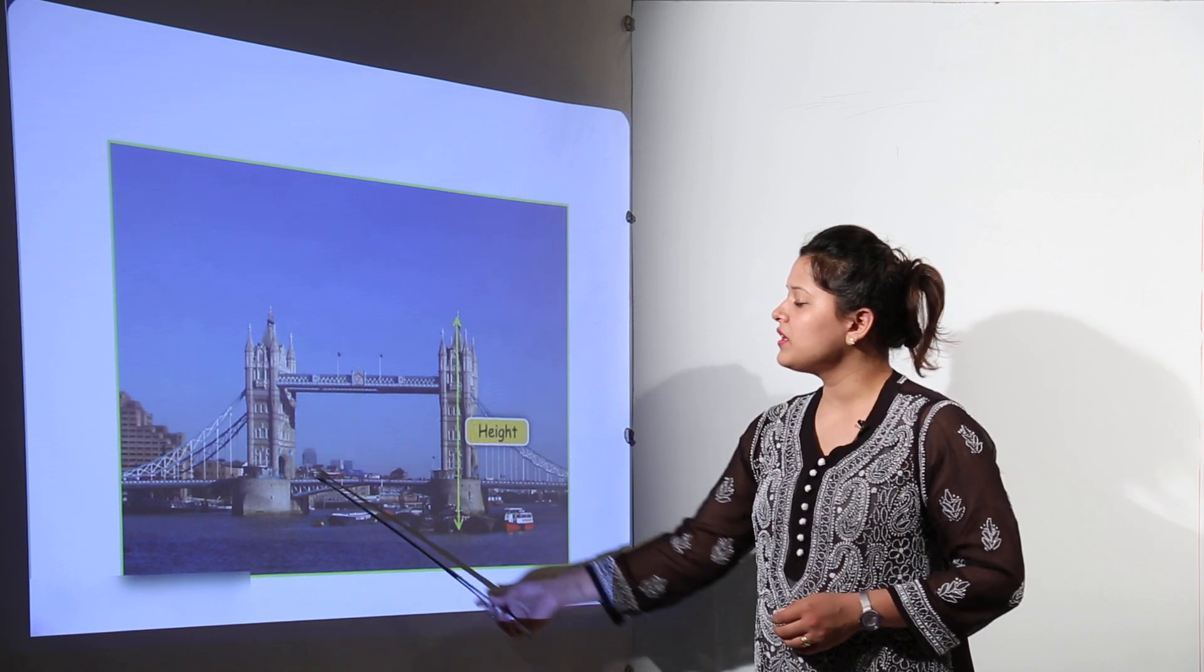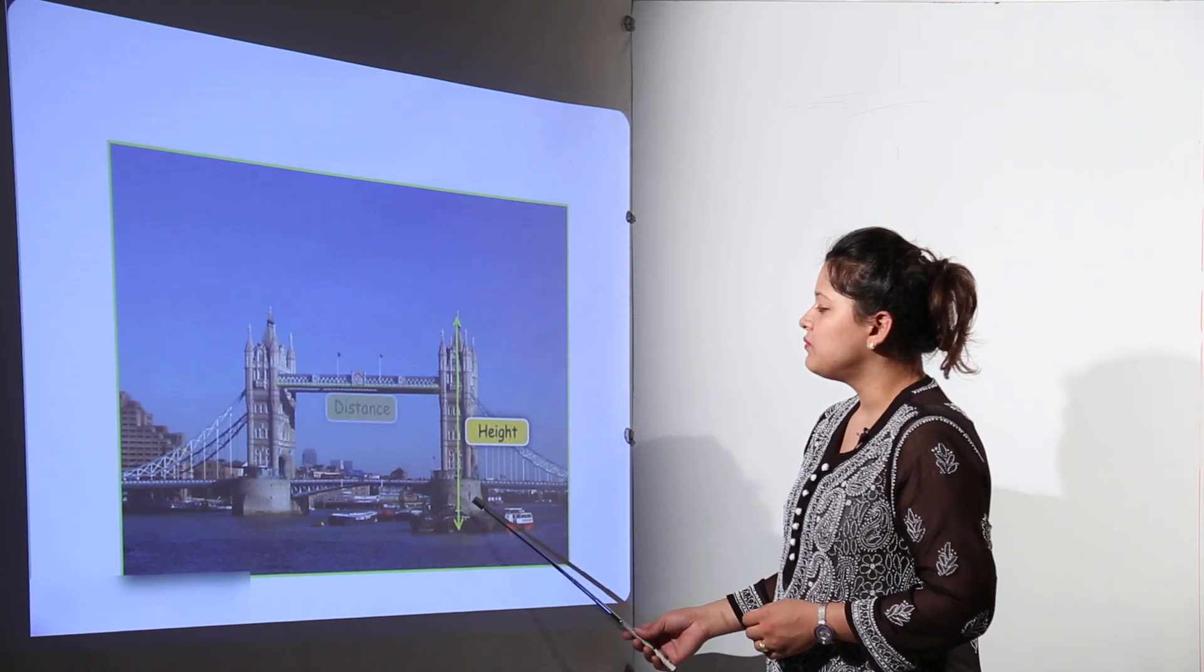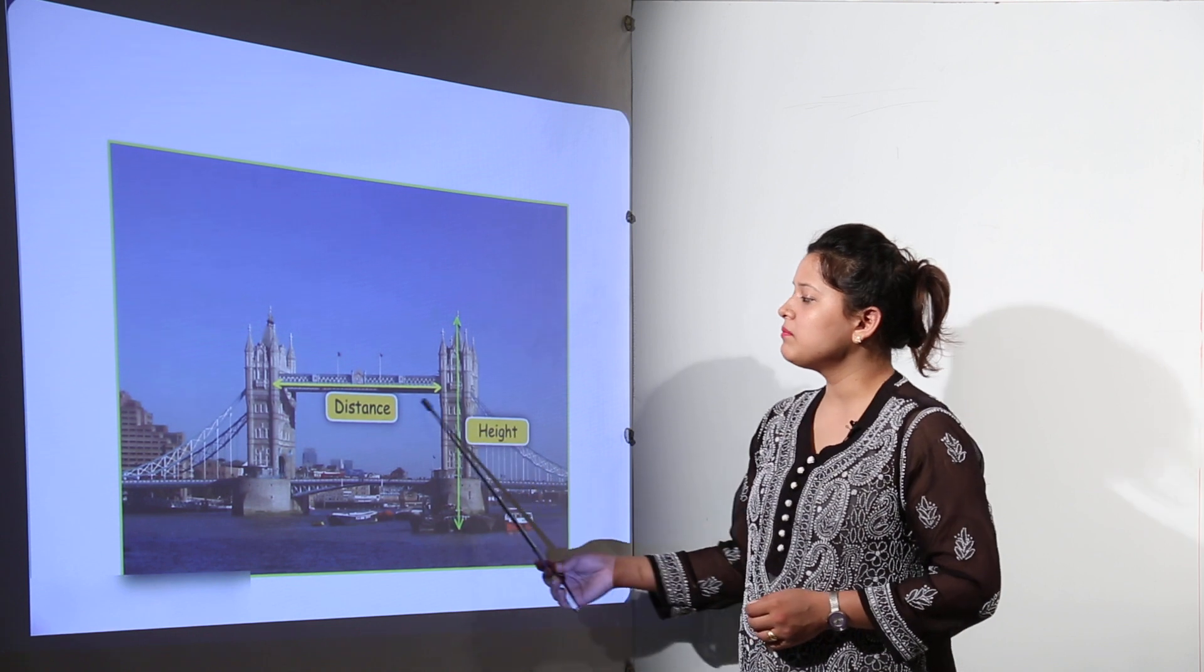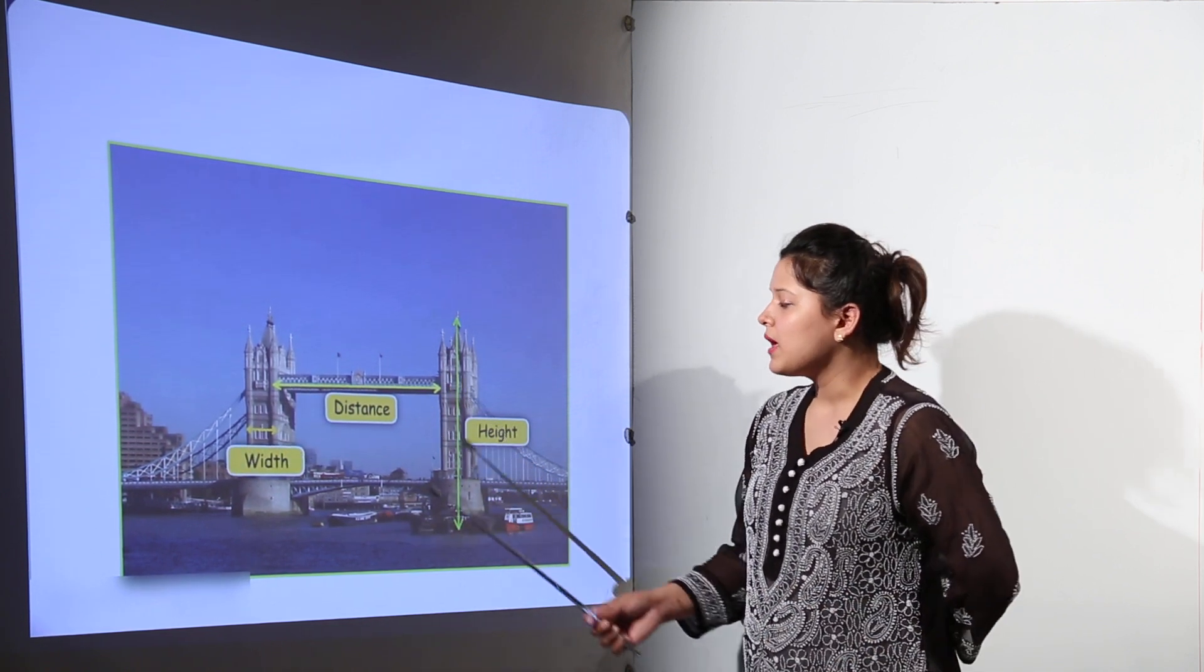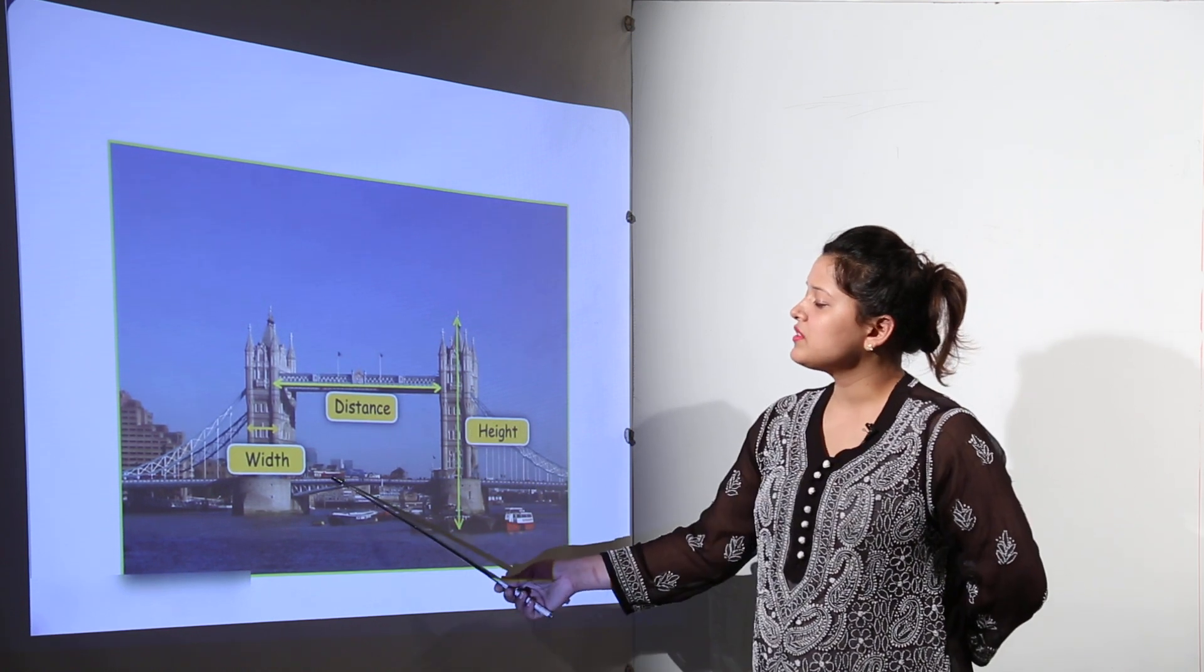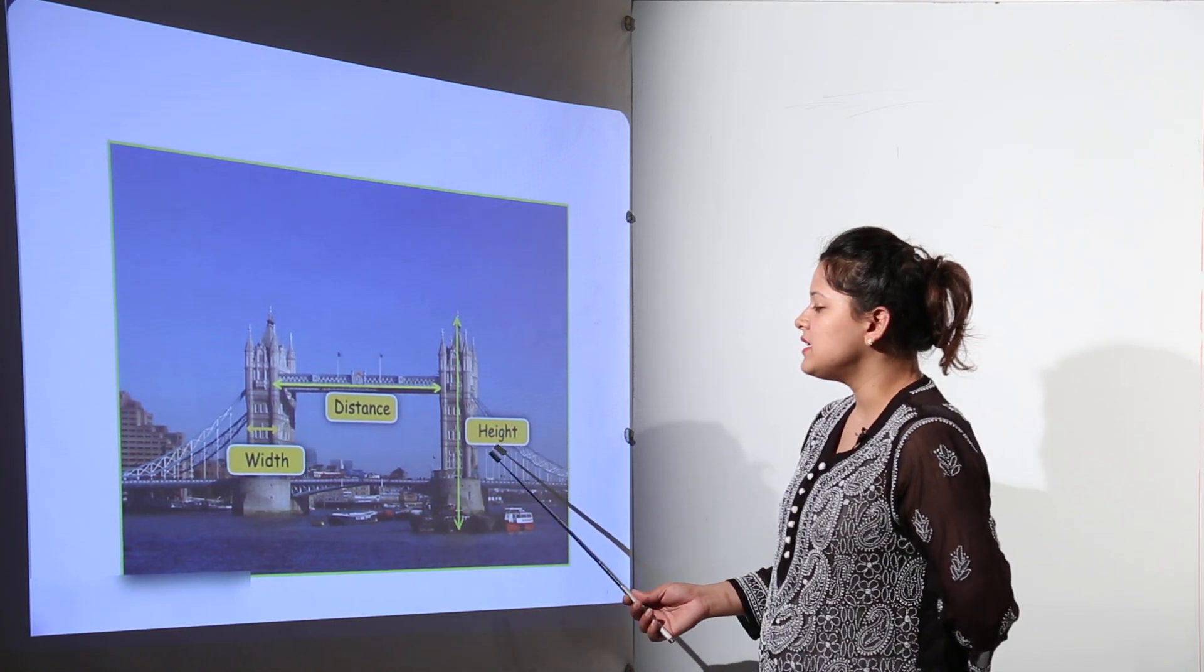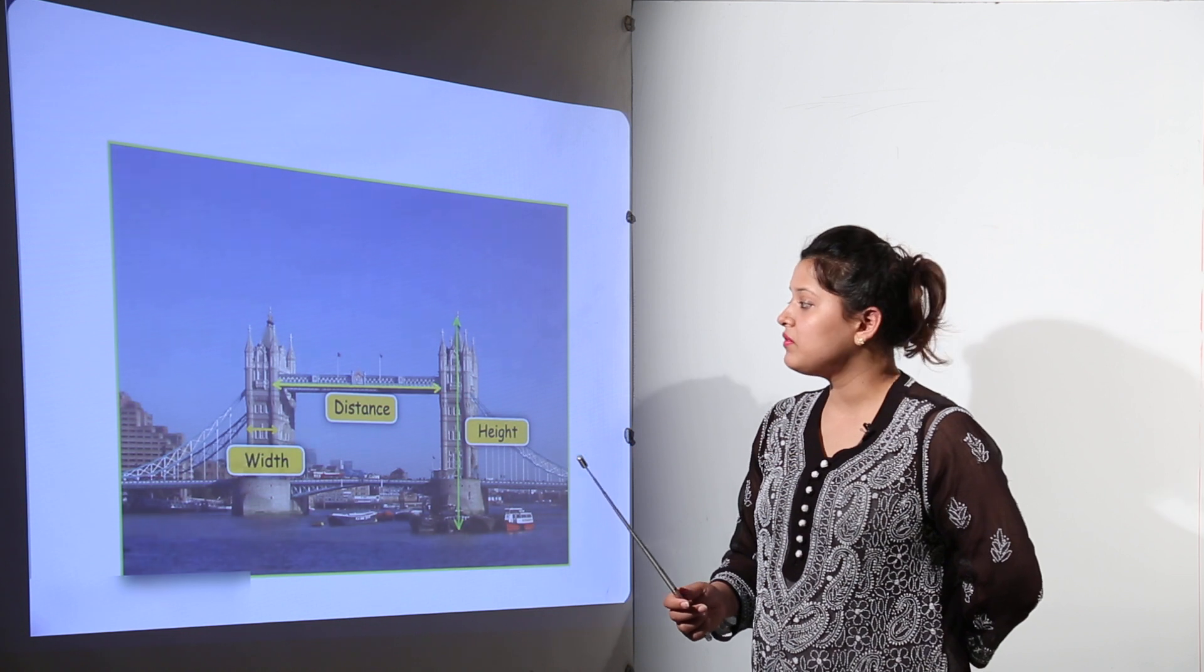What you see over here is a bridge. We can measure its height, we can measure its distance and we can measure its width as well. So how to measure these? We can measure these by the same units that we have learnt.